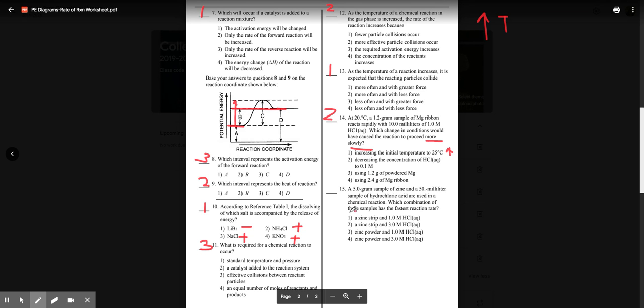A 5 gram sample of zinc and a 50 milliliter sample of hydrochloric acid are used. What would have the fastest reaction rate? You want more surface area and you want greater concentration. Which would have more surface area, strip or powder? It should be powder because it's got more surface area. And which is more concentrated? The 3 molar.